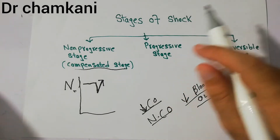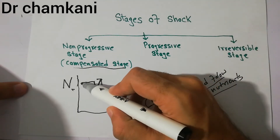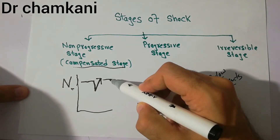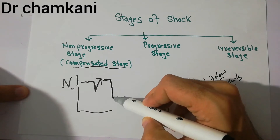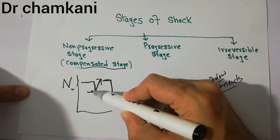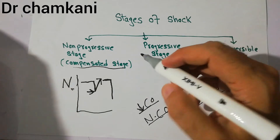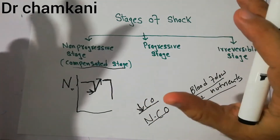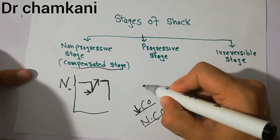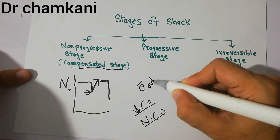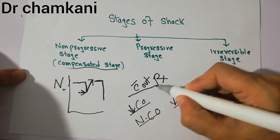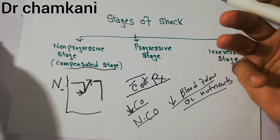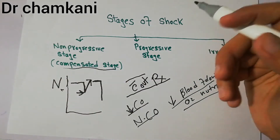This is compensated shock. If the shock increases beyond this stage, up to a certain point the non-progressive or compensated stage applies — the human body's compensatory mechanisms can reverse and correct it without external help, without treatment. These mechanisms include the sympathetic nervous system, fluid retention, and similar responses.